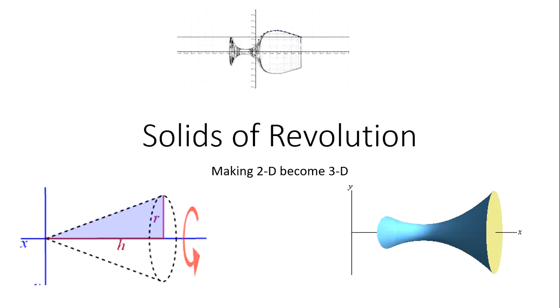Hello everybody. Today's lesson is going to be on solids of revolution, or how we make 2D objects become 3D objects. So what you're going to need today are your notes, a pen or a pencil, and probably a calculator.